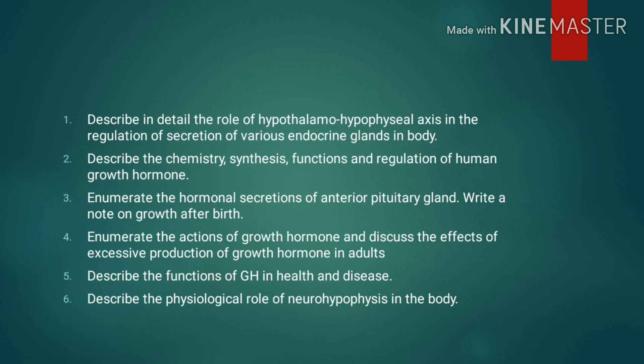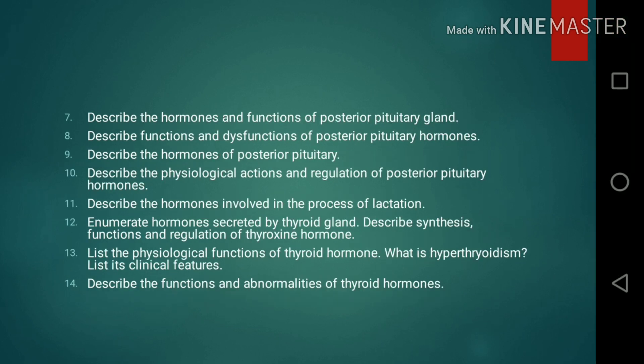Question 6: Describe the physiological role of the neurohypophysis in the body. Question 7: Describe the hormones and the functions of the posterior pituitary gland. Question 8: Describe the functions and dysfunctions of the posterior pituitary hormones. Question 9: Describe the hormones of the posterior pituitary. Question 10: Describe the physiological actions and regulation of posterior pituitary hormones. Question 11: Describe the hormones involved in the process of lactation.